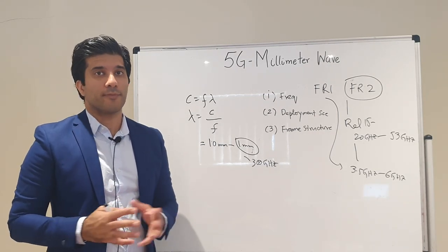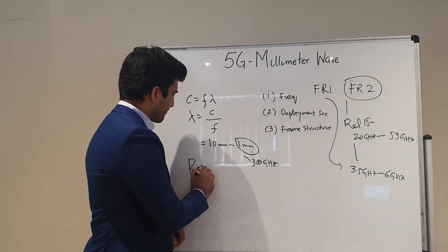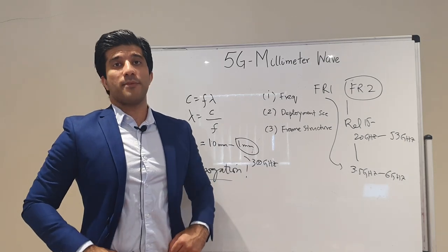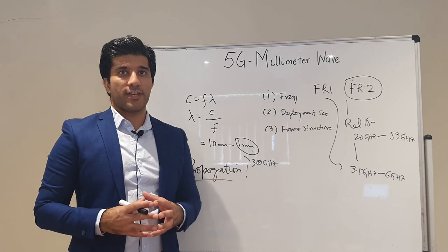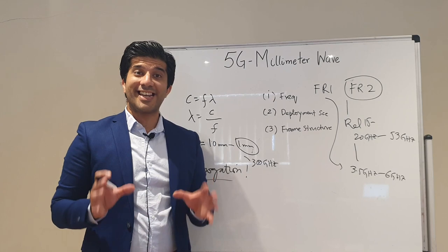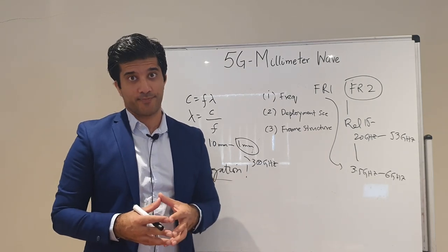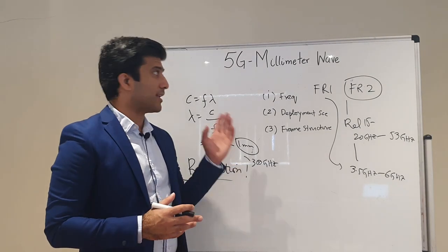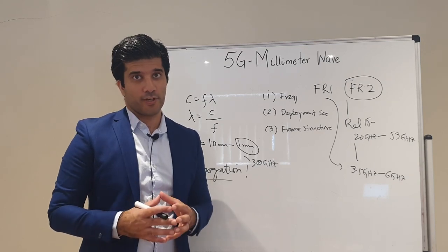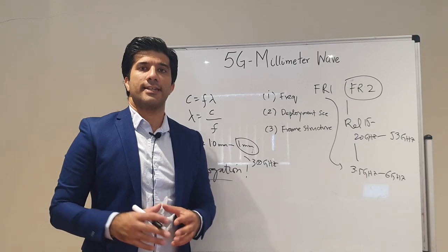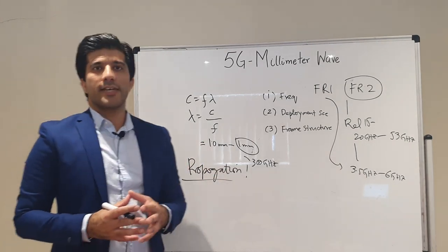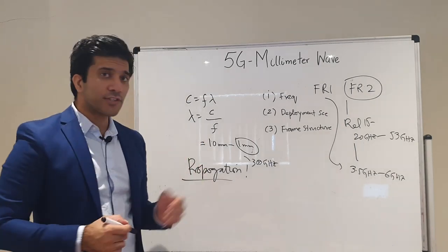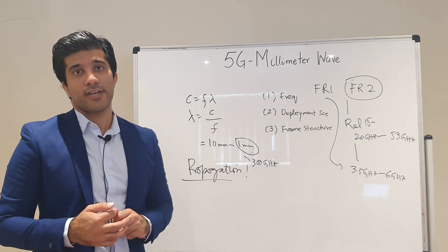With such high frequency and low wavelength, there are deployment challenges. First, propagation loss at millimeter wave frequencies is very high — for example, transmitting at 300 GHz can result in 88 dB of loss over just 10 meters. Second, millimeter waves experience significant absorption near water bodies or certain gases including oxygen, which further limits propagation distance.